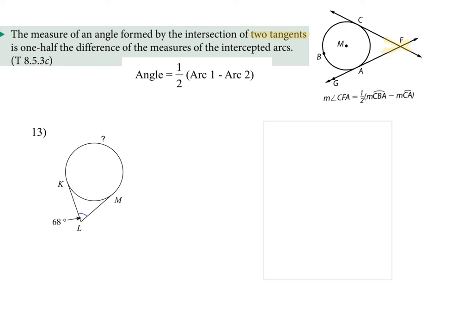I want to do this example because it's a little different. When two tangents intersect on the outside of the circle, you have the entire circle. So assign the arc you're looking for as x. If that piece of the circle is x, the other piece is 360 minus x, because the two tangents account for the entire circle. The rule is: to find the angle, take half of those subtracted. The angle given is 68, so: 68 = ½(x − (360 − x)).